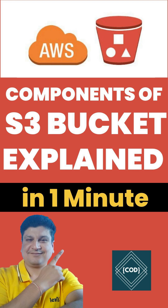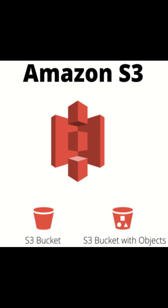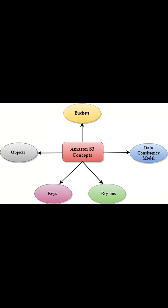Hello, good morning friends! Welcome back to your favorite channel, Code One Digest. Today in this short tutorial we will learn how Amazon S3 works. Amazon S3 is an object storage service that stores data as objects within a bucket. An object is a file or any metadata that describes the file. A bucket is a container for objects.